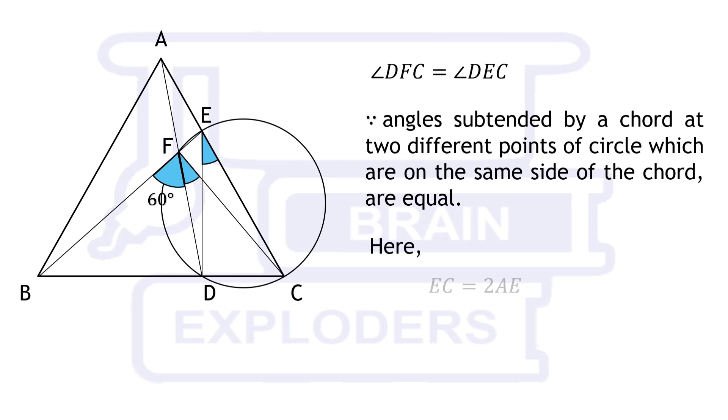Here EC is equal to 2AE which is given and we know that AE is equal to DC so we can replace AE by DC. We get EC equals 2DC.